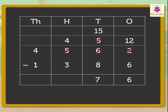Now, subtract the hundreds. That is, 4 minus 3 is equal to 1. Lastly, subtract the thousands. That is, 4 minus 1 is equal to 3. Thus, 4,562 minus 1,386 is equal to 3,176.